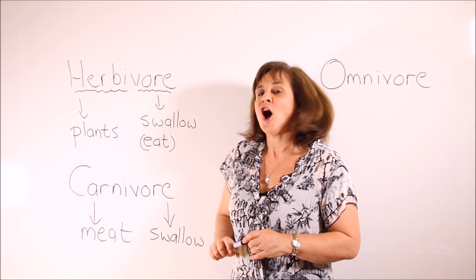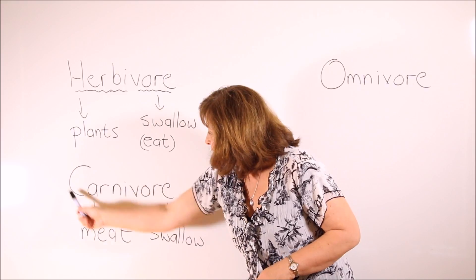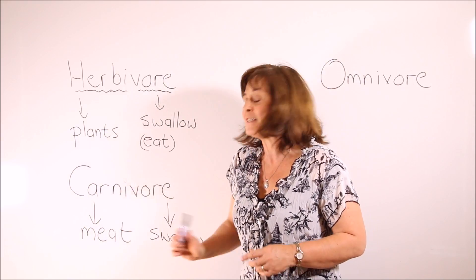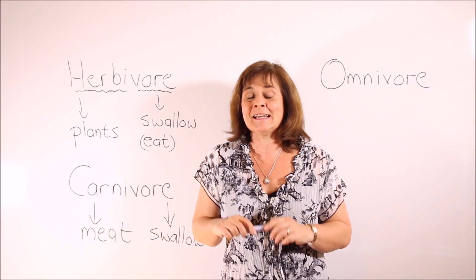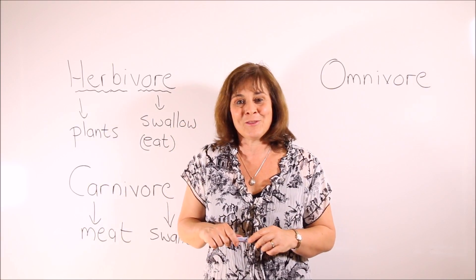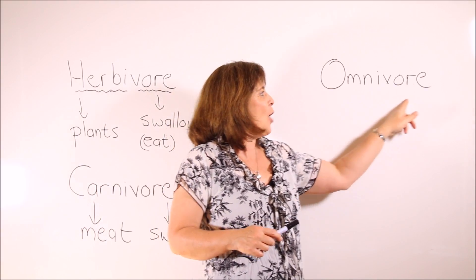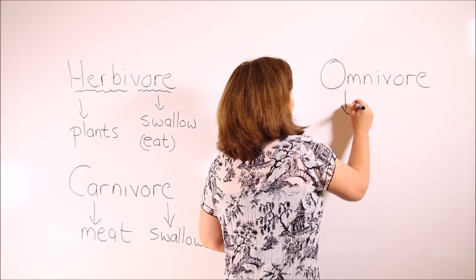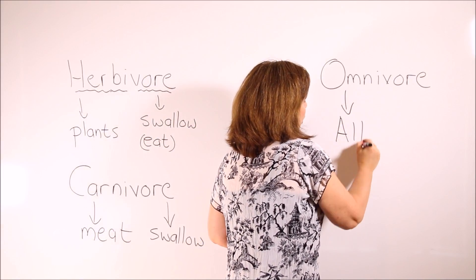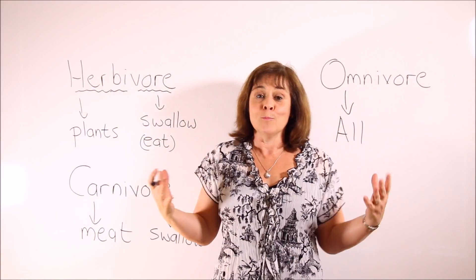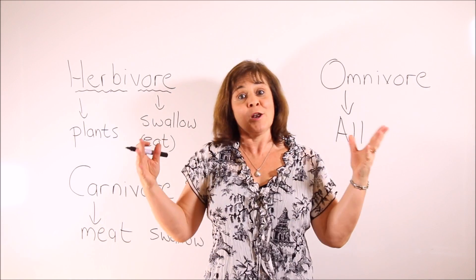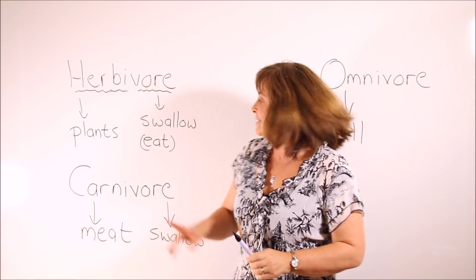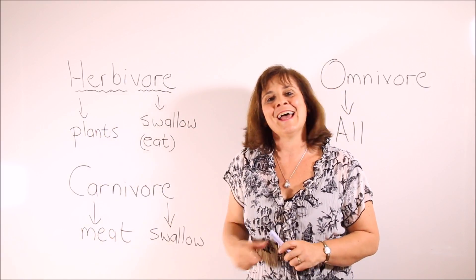Carnivores are animals that eat meat. 'Carnis' is the Latin word that means meat, so carnivores eat meat and they specifically hunt and kill their prey. And that brings us to omnivore. Those of you who know the meaning of Greek roots will know that 'omni' means all, so an omnivore is an animal that swallows all — an all eater. Basically an omnivore eats plants as well as meat.